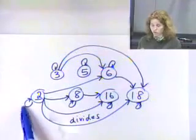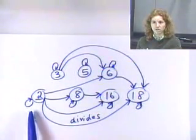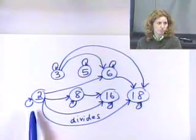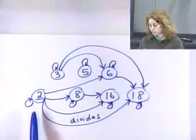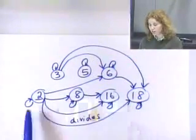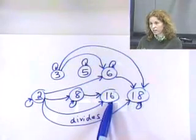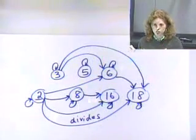So one thing we could do is get rid of these stupid little loops. We could just say we know it's reflexive and just write that on the side and get rid of all those. Another thing we could do is we say we know it's transitive, so if 2 divides 8 and 8 divides 16, I don't have to draw an arrow from 2 to 16. So I could get rid of the transitive edges.